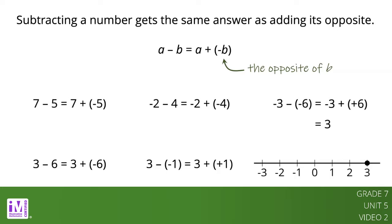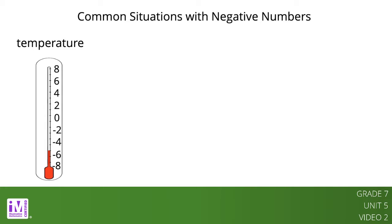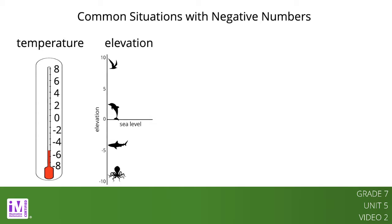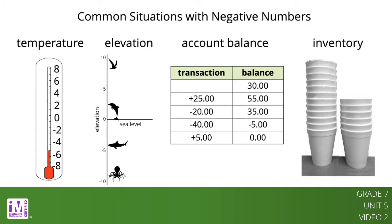Sometimes we use positive and negative numbers to represent quantities in situations. Here are some common situations that can be represented with positive and negative numbers: temperature, elevation, and an account balance. We also need to understand what it means to add or subtract the quantities, and what it means when a quantity is positive versus negative.